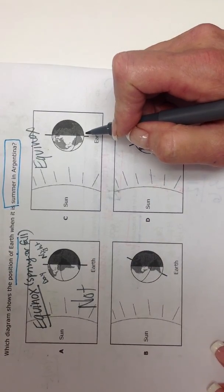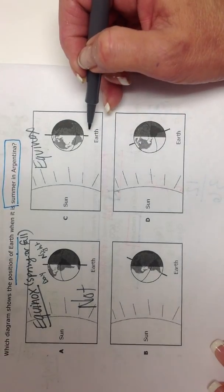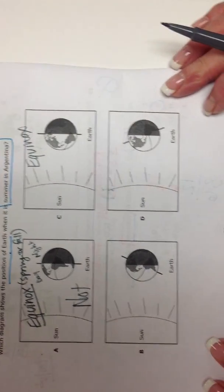These diagrams, neither one of them are very good. But if you see something like that, just know when the earth day and night is split in half, you're looking at an equinox.